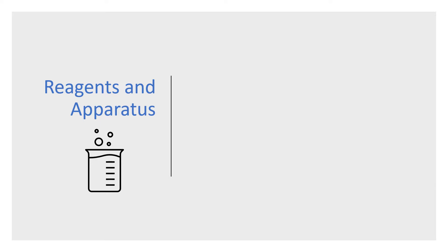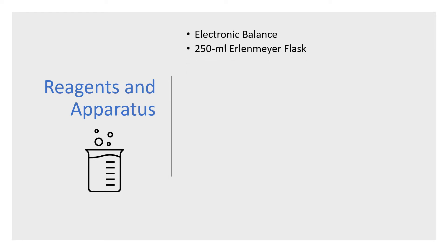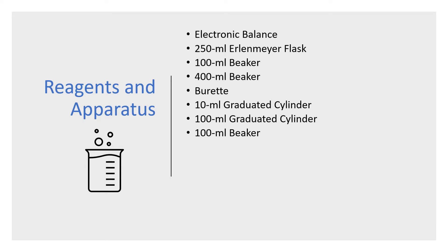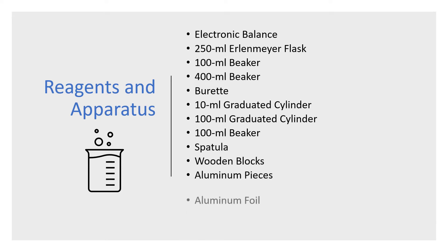Let's begin with reagents and apparatus. The first one is an electronic balance, a 250 ml Erlenmeyer flask, a 100 ml beaker, a 400 ml beaker, a burette, a graduated cylinder — one for 10 ml and one for 100 ml — a spatula, wooden blocks, aluminum pieces, aluminum foil, distilled water, and lastly sugar.